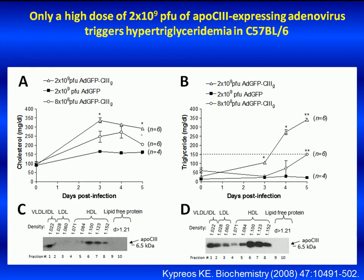However, in C57 black 6 mice infected with 2×10⁹ PFU, shown in panel D, ApoC3 levels increased in both VLDL, IDL, and HDL, while a significant amount of ApoC3 was also found in the LDL fractions. Therefore, infection of C57 black 6 mice with ADGFP C3 virus results in efficient expression and secretion of human ApoC3 in the plasma of the infected mice, and the recombinant adenovirus ADGFP C3 appears to provide a versatile in vivo expression system that, depending on the dose, produces different phenotypes similar to those previously reported in ApoC3 transgenic mouse models.